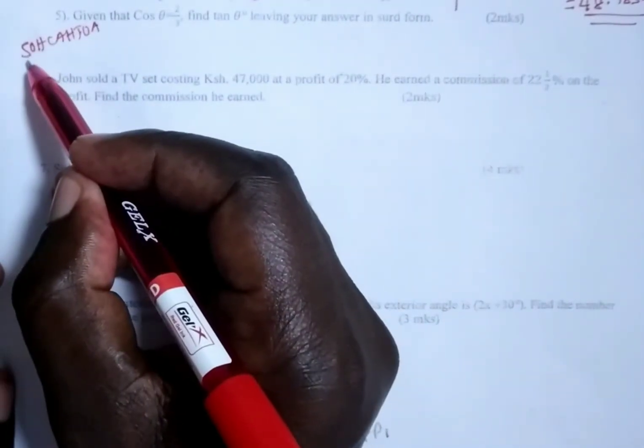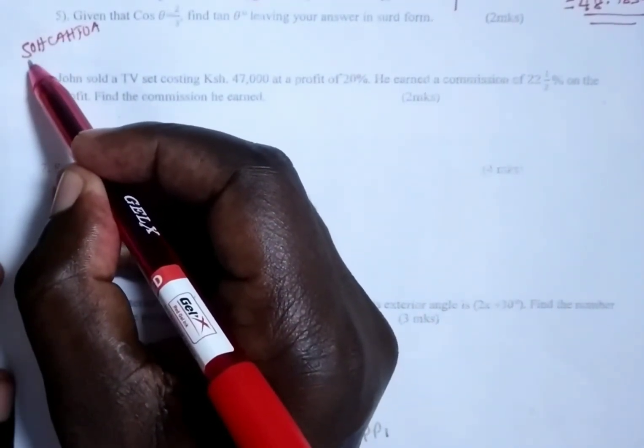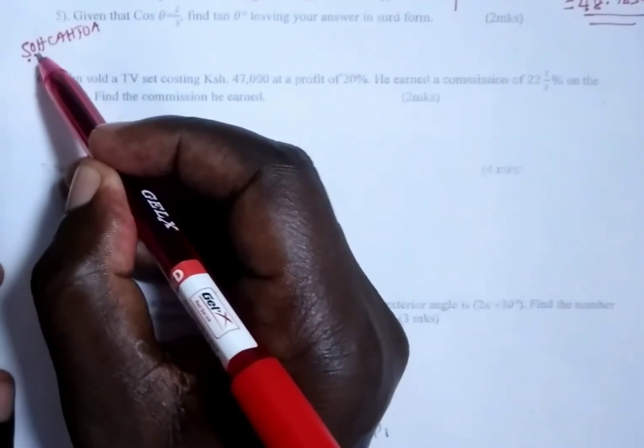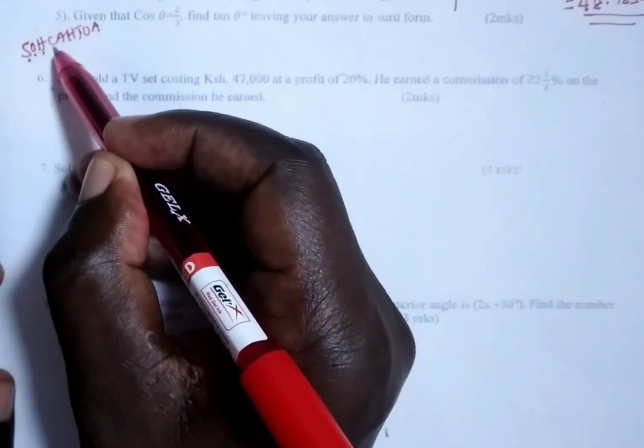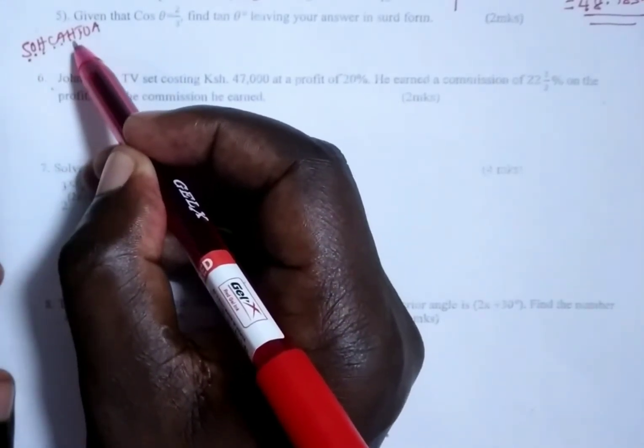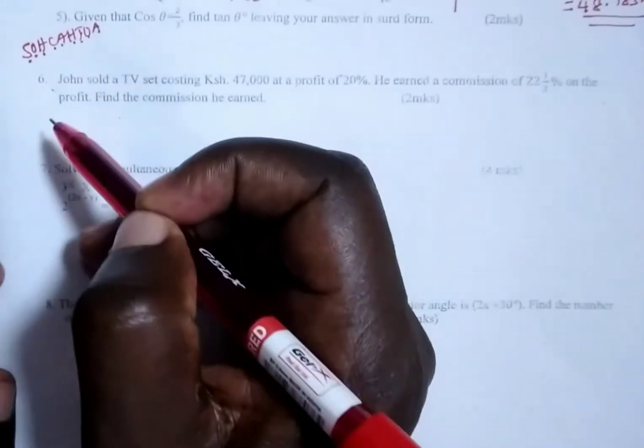SOHCAHTOA: to get the sine of an angle, you take the opposite side and divide by the hypotenuse. Cosine is adjacent over hypotenuse, and tangent is opposite over adjacent.